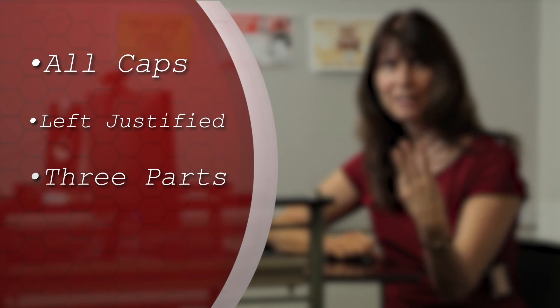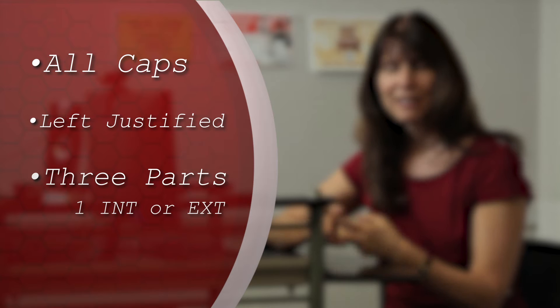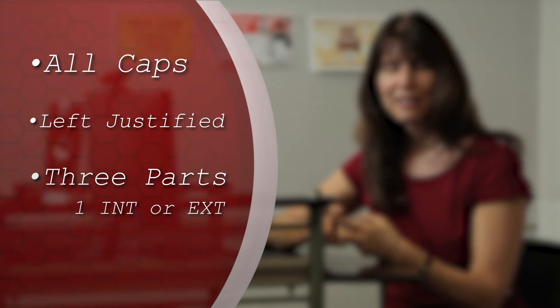First thing that we look at is the format. Format for a scene header is that it is in all caps, left justified, and it has a total of three parts. First part is whether it's interior or exterior. Next part is the name of the set. Third part is whether it's day or night.